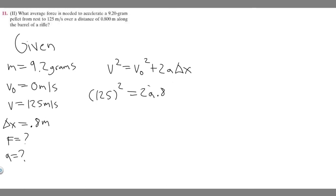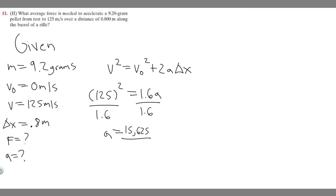0.8 times 2 is 1.6, so we have 1.6a. Dividing both sides by 1.6: a equals 125 squared, which is 15,625, divided by 1.6, giving us a equals 9,765 meters per second squared.